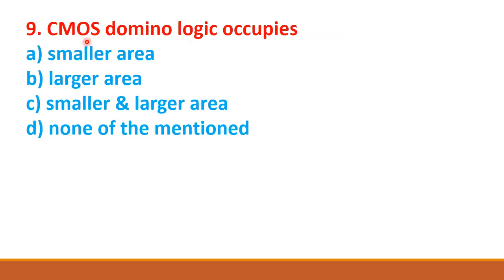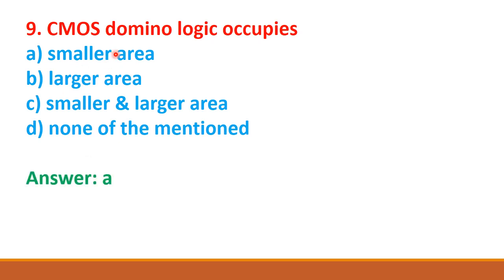Next question: CMOS domino logic occupies — option A: small area, option B: larger area, option C: smaller and larger area, option D: none of the mentioned above. The correct answer is option A: smaller area. So CMOS domino logic occupies smaller area.